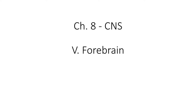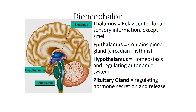Our next step into the brain is going to be the forebrain and its structures and functions. Let's begin with the diencephalon. This is part of the forebrain that includes the epithalamus, the thalamus, hypothalamus, part of the pituitary gland, and the third ventricle. This is surrounded by the cerebral hemisphere.